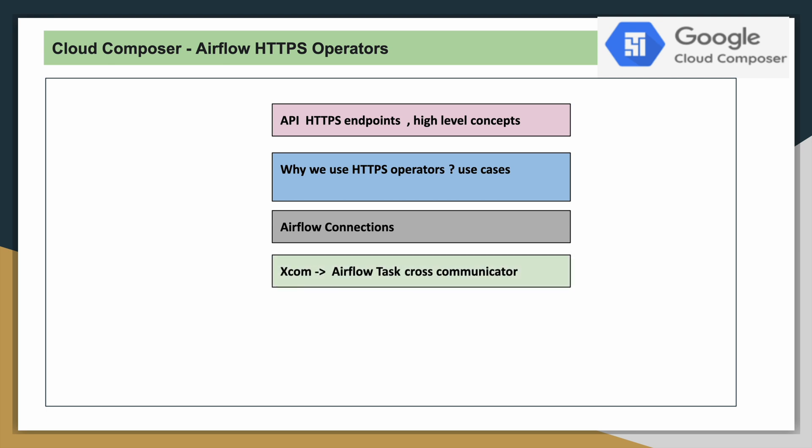The next important concept is XCOM. This is a cross-communicator between two different Airflow tasks. For example, if you have a requirement where task 2 depends on the output of task 1, you can use XCOM to pass that output data from task 1 to task 2, which helps accomplish that particular requirement.